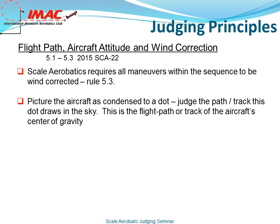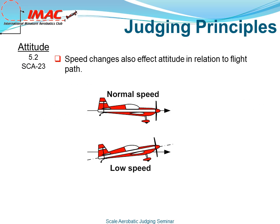Picture the aircraft as a condensed dot. Judge the path or track this dot draws in the sky. This is the flight path, or track, of the aircraft's center of gravity. Speed changes also affect the attitude in relation to flight path. In a low-speed situation, the nose would be pitched up, maintaining horizontal flight.